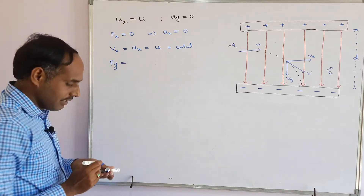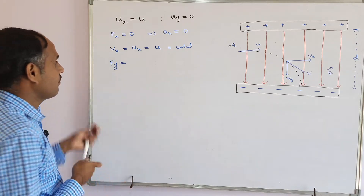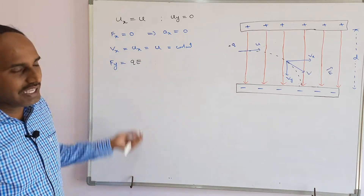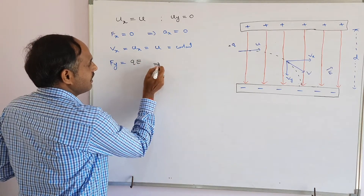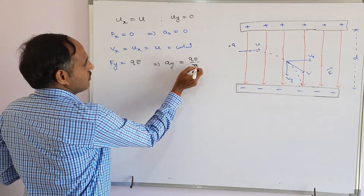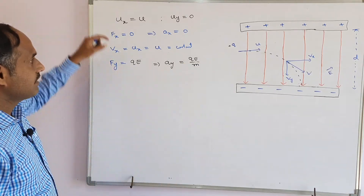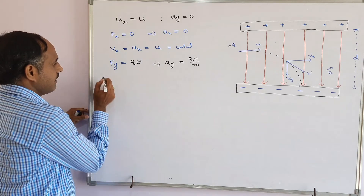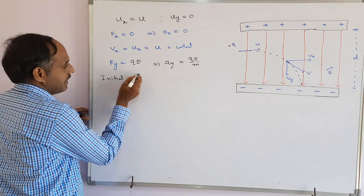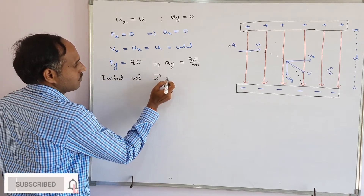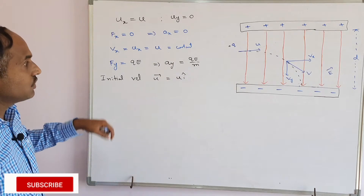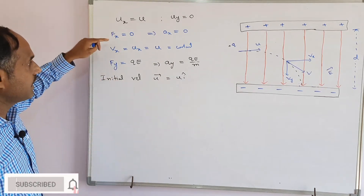Since the particle experiences a force in the vertical direction due to the applied electric field, that force can be written as qE. When it experiences this force, it accelerates with acceleration qE/m. The initial velocity vector can be written as ū = u î, and our intention is to find the final velocity.